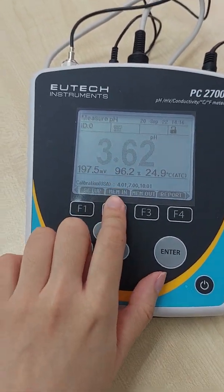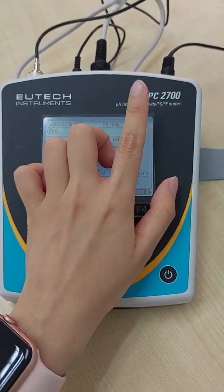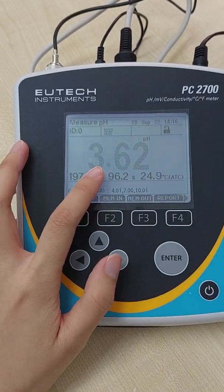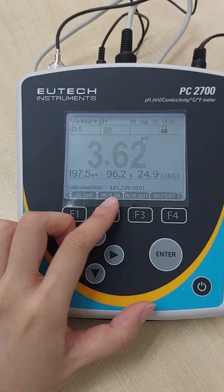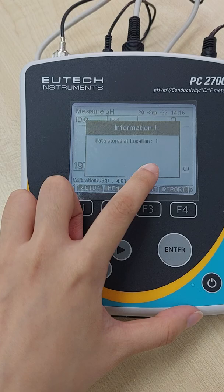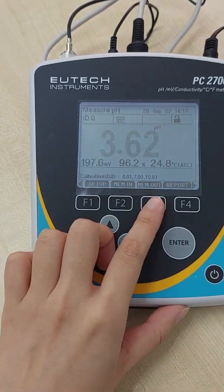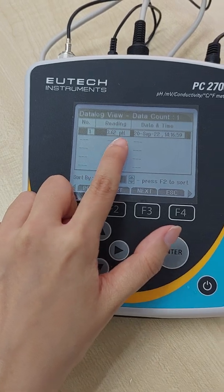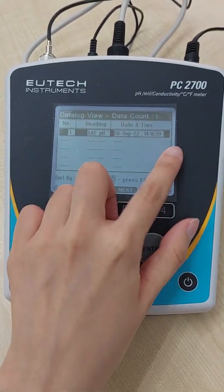Next, we have the memory in and memory out. So for PC2700, you can store up to 500 data. So if you want to save a data, just press memory in. Then it is stored. Location. Then you go memory out. You can see the reading is stored right here, the date and time.